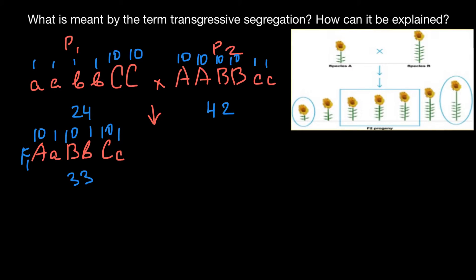This 33 cm is not exactly in the middle between 24 and 42, but as you can see it is a blend — it falls into the category we expect, where the progeny show an intermediate phenotype somewhere between the two parents.